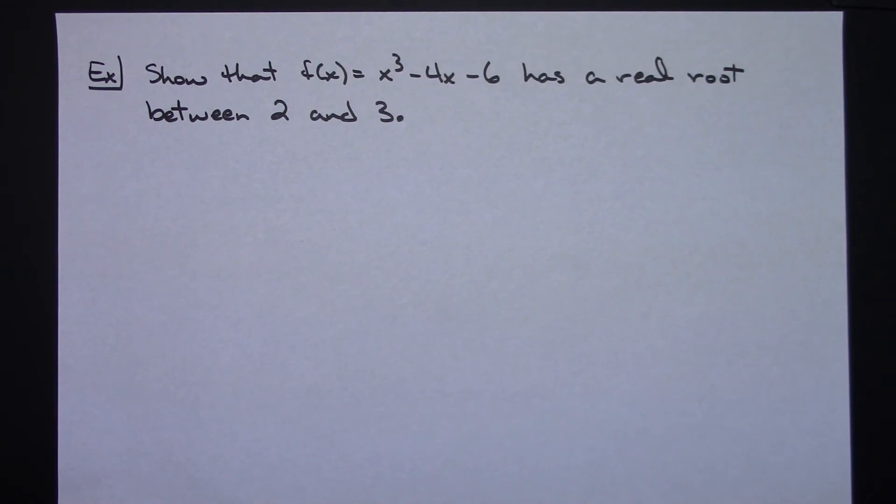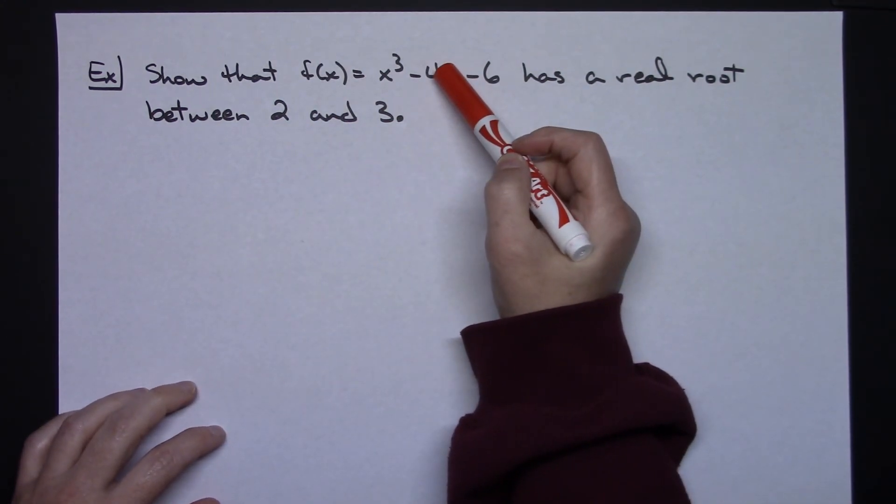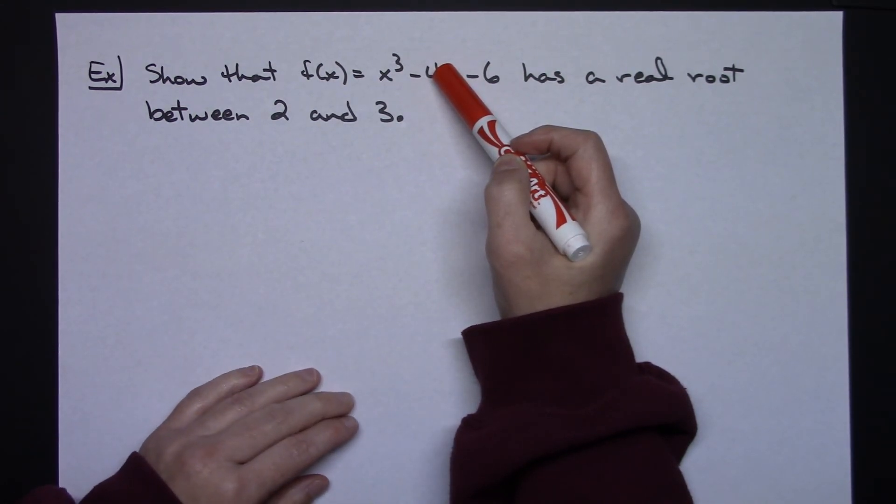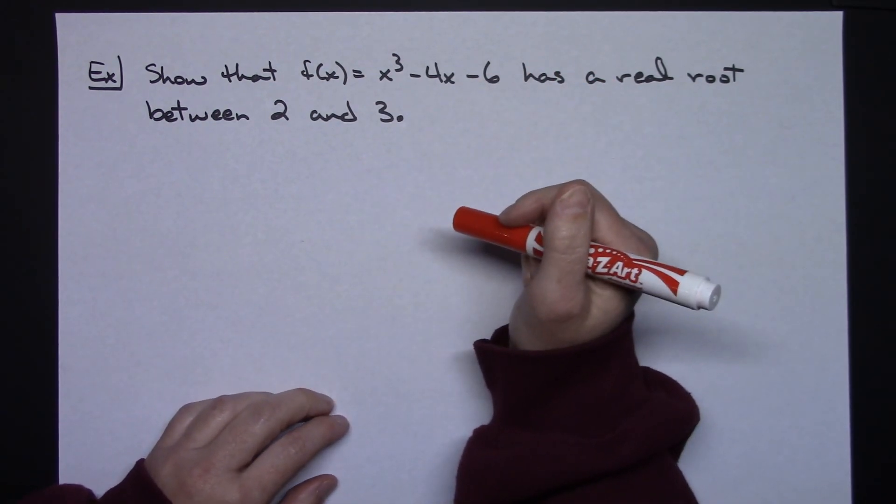They might ask you to show that the function F of X equals X to the third minus 4X minus 6 has a real root between 2 and 3. So what we would need to do is plug both 2 and 3 into that function and just take a look at what the answers are. Are we going to get a positive one, a negative one, both positive, both negative?